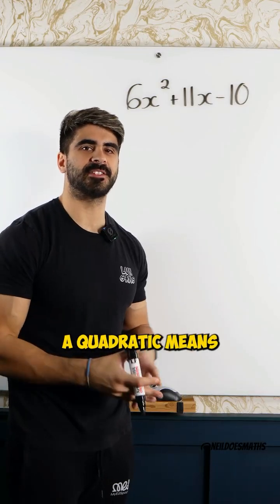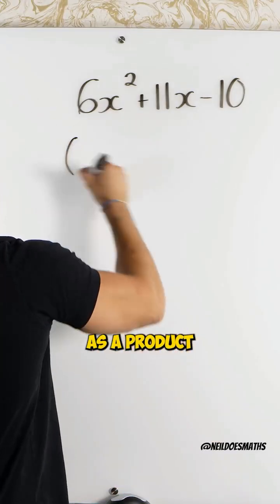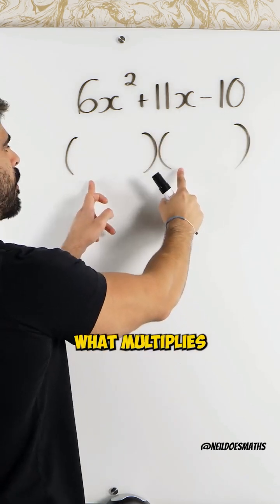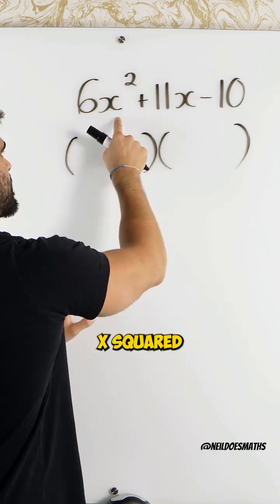To factorize a quadratic means to rewrite it as a product of two brackets. These two ask us what multiplies together to give you 6x².